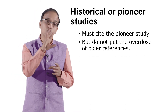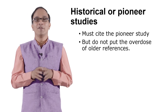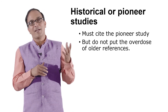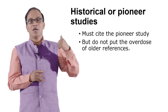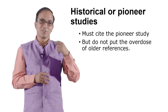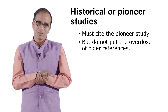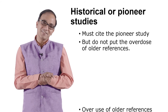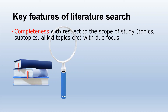But do not overdo older references either. Sometimes we find a review article from 1998 that is very relevant, and then include all its cross-references going back to 1946, 1956, 1966 — ending up at 1970 or 1980. If you are writing in 2019 and your literature stops at 1980 or 1990, that is not acceptable at all.